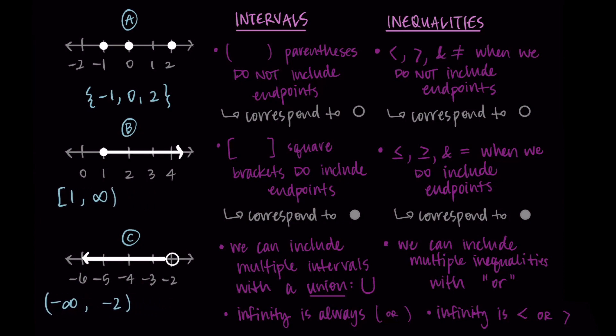So let's try this out on our examples b and c. What helps here is indicating what variable we're looking at — I'm going to call it x, so looking at x values on this number line. In example b, we're looking at all of the x values that are greater than or equal to 1. It's greater than or equal to because the dot is filled in, so we'd write x is greater than or equal to 1. In example c, we're looking at all of the x values less than negative 2, so I would write x is less than negative 2. Because it's an open circle, I just have strictly less than negative 2.